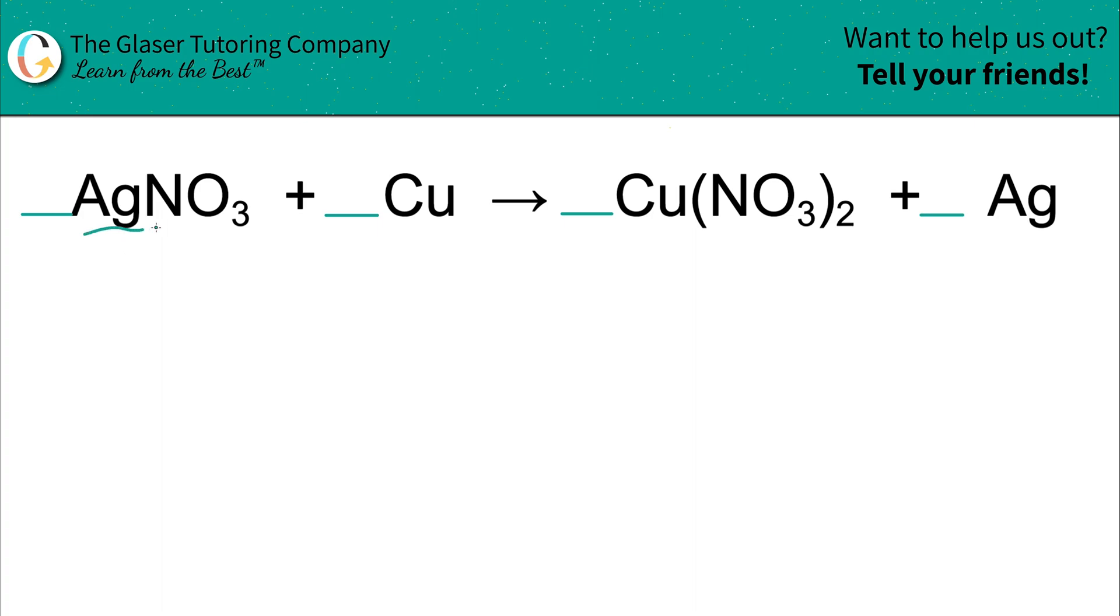So I see silver. I want to make sure it only exists in one compound on the left and only in one spot on the right. I have one silver on the left; that's where the subscripts come into play. The subscripts tell us how many of each atom we have in the molecule. We have one silver there and one silver on the right, so that's balanced already. Move on to the next.